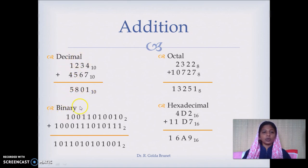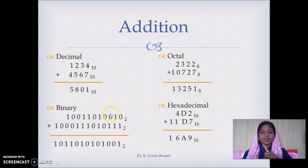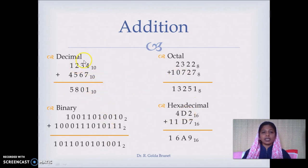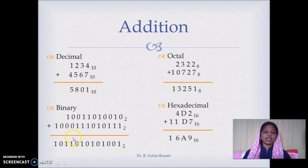In binary addition, 1 plus 0 is 1, then 1 plus 1 is 2 in decimal, which is 10 in binary. So we write 0 and carry forward 1. Then 1 plus 0 plus 1 is again 2, so we write 0 and carry forward 1. Then 1 plus 0 plus 0 is 1. Each binary digit is called a bit, and whenever we get a carry, we pass it on to the next bit position.